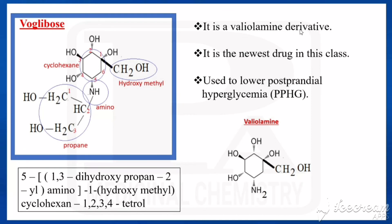Voglibose is actually a valiolamine derivative. Valiolamine has the same cyclohexene core with four hydroxy groups, a hydroxymethyl at position one, and an amino group at position five. In voglibose, one hydrogen on that amino group is replaced by the dihydroxypropane chain. Voglibose is the newest drug in this class and is used to lower postprandial hyperglycemia.